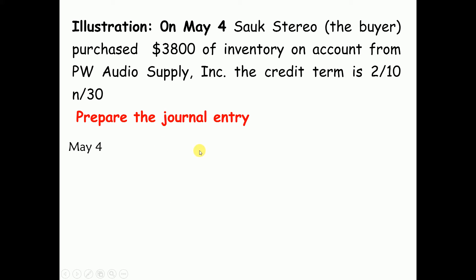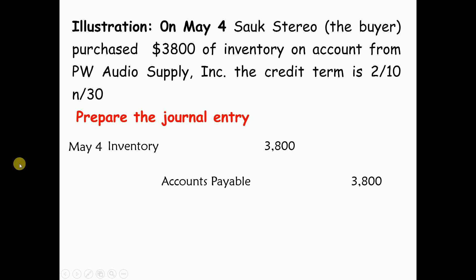Let's make the journal entry. In the perpetual inventory system, a merchandising company records: Inventory debit, Accounts Payable credit. At the time of purchase under a perpetual inventory system, we debit Inventory and credit Accounts Payable — not a purchases account.